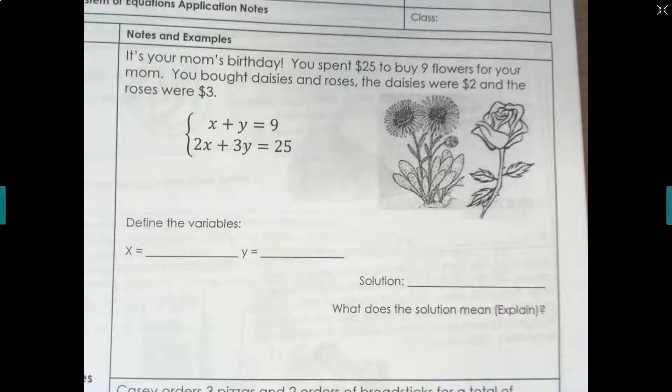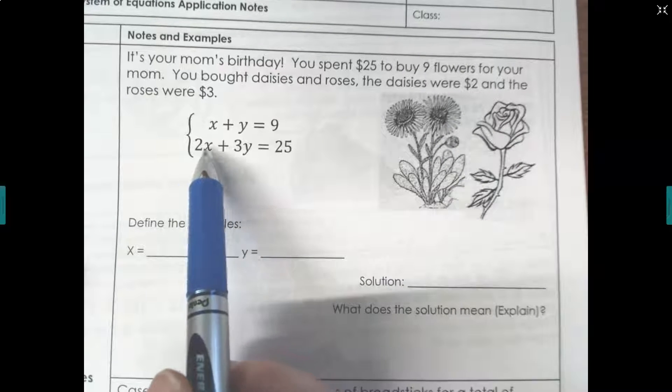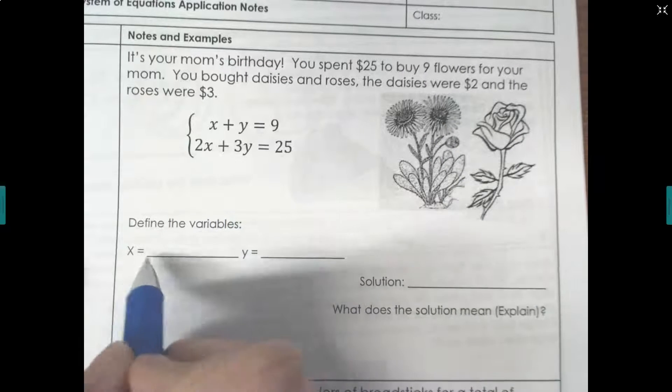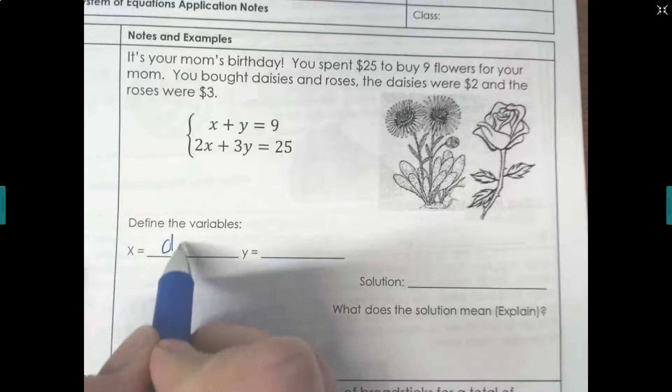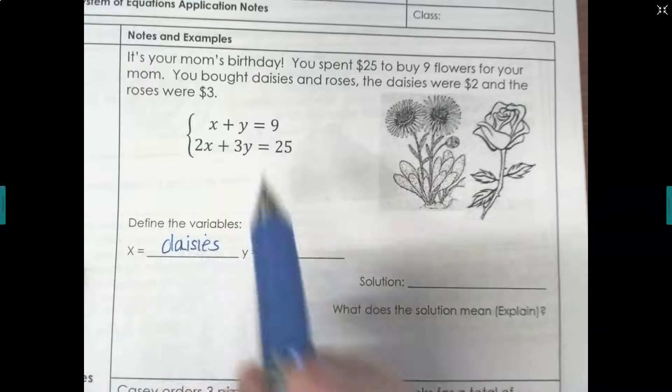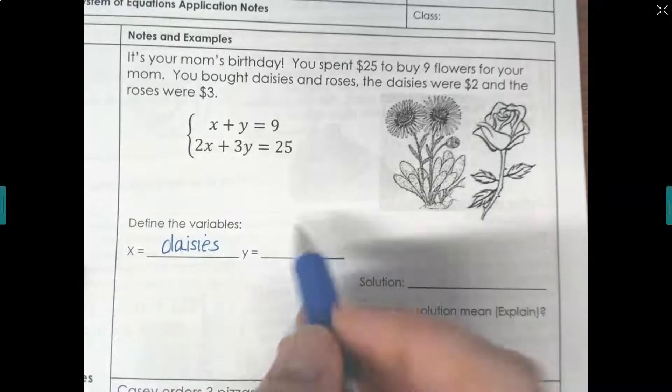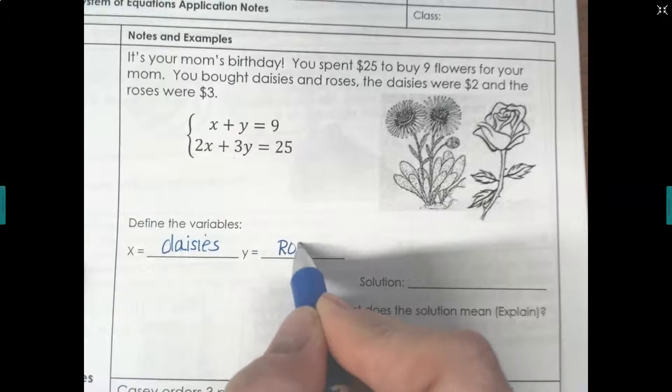It goes on to say that we bought daisies and roses. The daisies were $2 each and the roses were $3 each. The daisies were $2 and you see the two by the x. That says two times the number of daisies. So that means the x is representing the daisies because the numbers match. Two times the number of daisies and the roses were $3, which is next to the y. So that means the y is the roses.